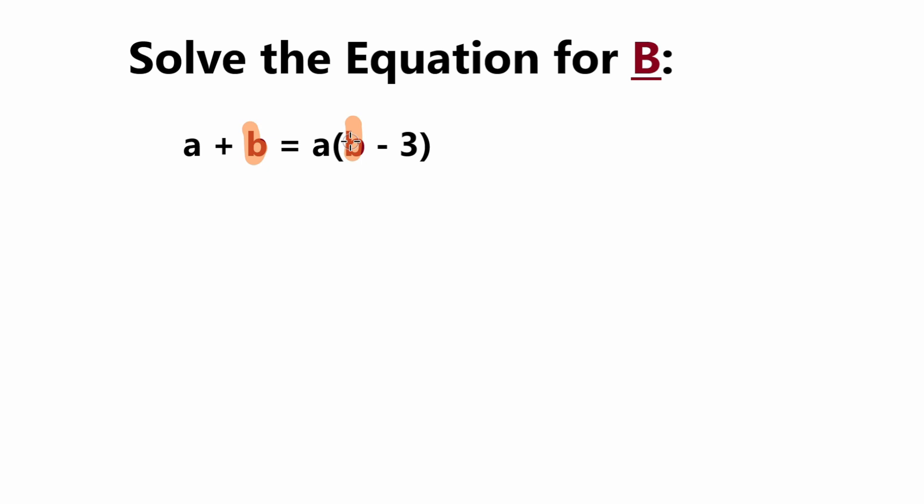So the first thing that I'm going to do to solve for b is we're going to simplify the right side a little more. Since this a is being multiplied to the b minus 3, which means we can distribute this a, distribute it to both of the terms here, to the b and to the negative 3. So let's rewrite that.